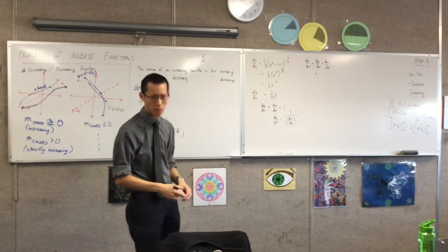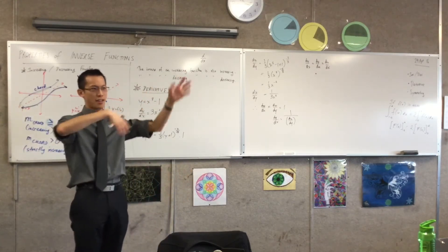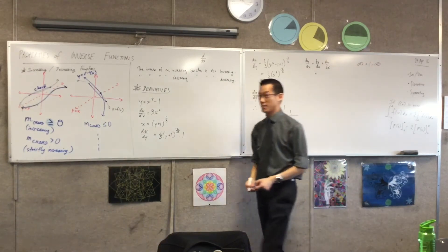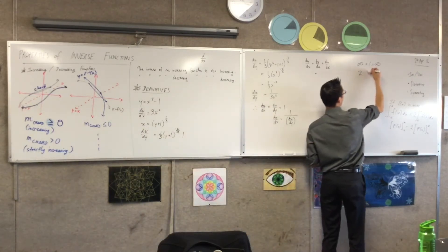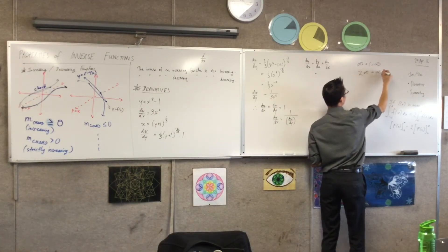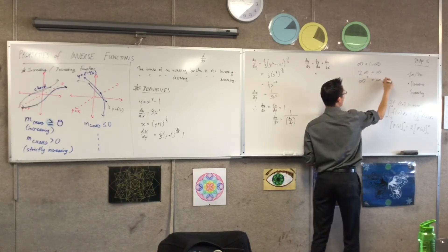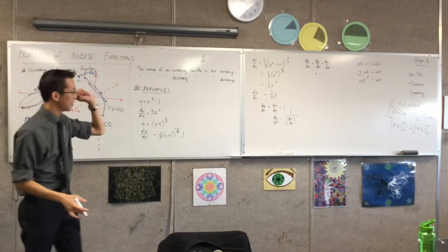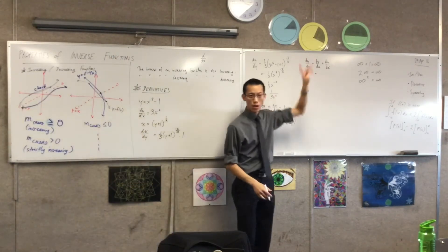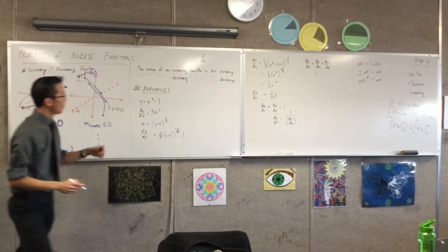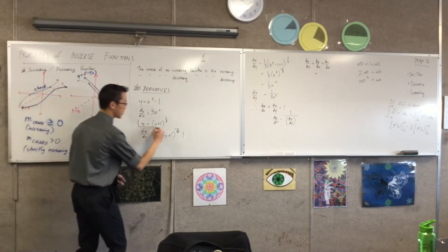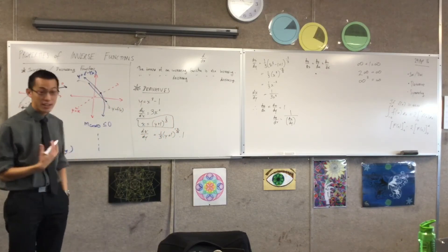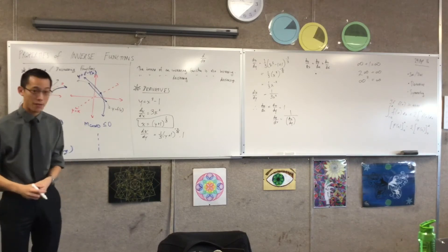It's this weird infinitesimally small thing — how does it behave? It's a bit like infinity, and we know we can't just throw infinity around like any regular number. You can do strange things to infinity depending on which infinity you're looking at, so infinity is not a normal number. But these infinitesimals, you can treat them normally. I'm going to take advantage of that with inverse functions.